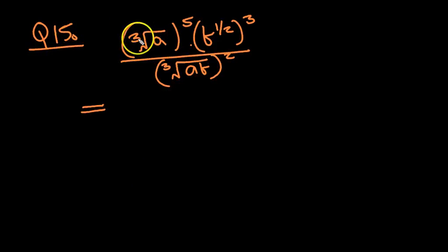Okay guys, let's have a look at 15 then. We've got the cube root of a, all to the power of 5. We've got b to the half, all to the power of a cubed. All divided by the cube root of a, b, all to the power of 2 squared.